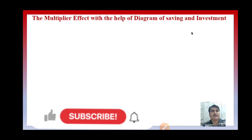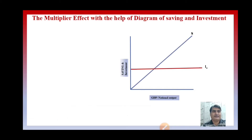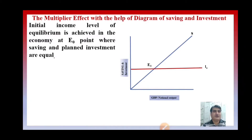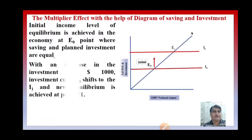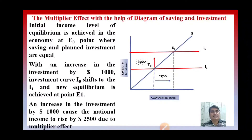Multiplier effect using the saving and investment diagram: saving and investment are measured on the y-axis, and GDP and national output on the x-axis. I0 is the investment curve and S is the saving curve. The initial equilibrium is at point E0, where saving and planned investments are equal. As investment increases from I0 to I1, the new equilibrium is E1. The investment curve I0 shifts to I1, and as a result GDP increases — an increase in investment by 1000 dollars causes national income to rise by 2500 dollars due to the multiplier effect.